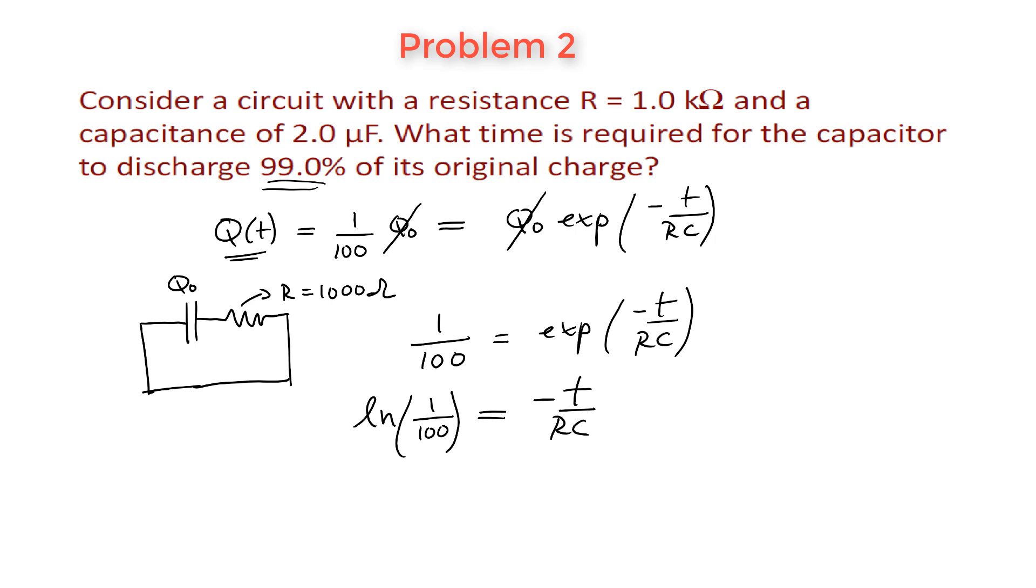Now don't worry about the negative sign here. There's an overall negative sign. When you take the natural log of 1 over 100, that's going to give you a negative number. And it's going to cancel the negative side on the right hand side of this expression.